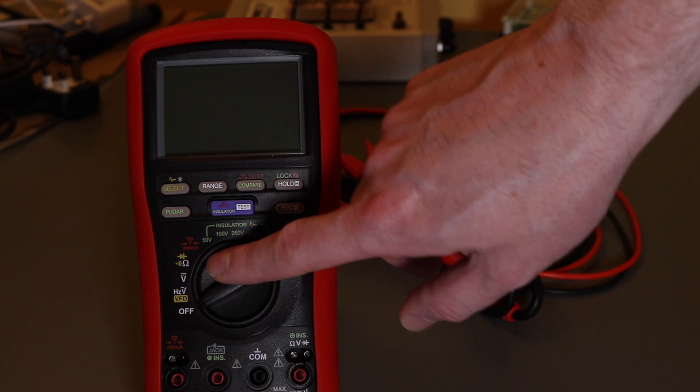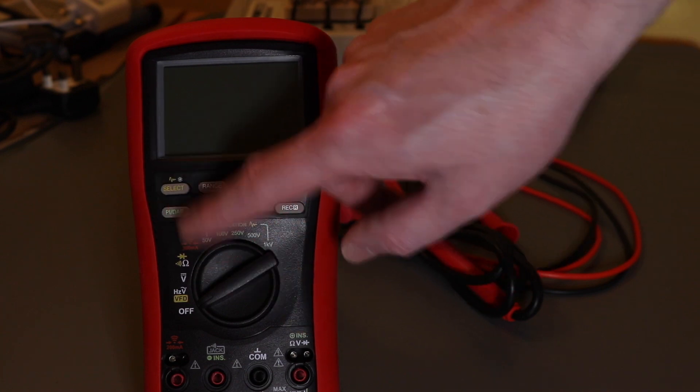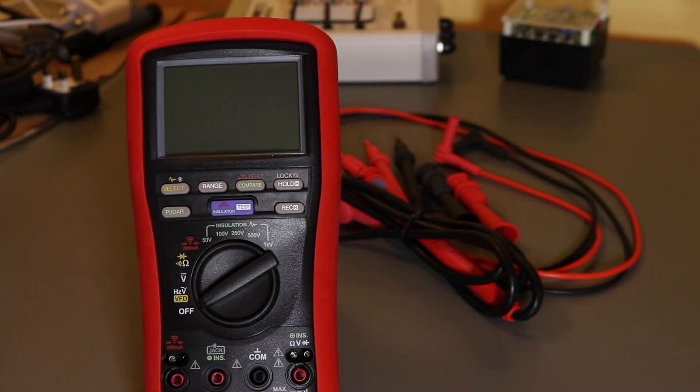There are meters that have either of those two functions, so that have the earth bond but not PI and DAR, or that have PI and DAR and not the earth bond. So that's the reason why I selected this one.